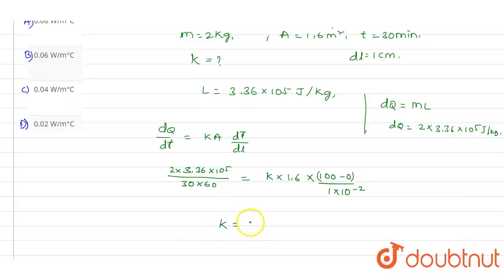So the value of k here we need to find. So k will be equals to 6.72 into 10 power minus 1 divided by 18 into 1.6, so this value will be 0.02 W per m degree Celsius. So this is the value of the thermal conductivity.